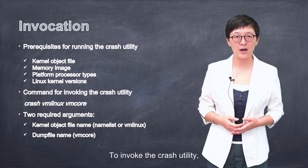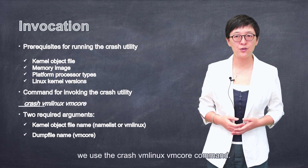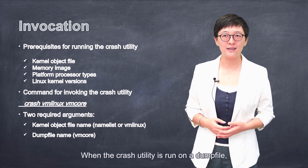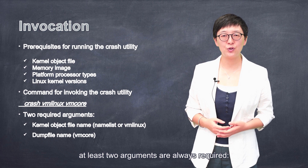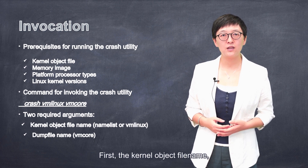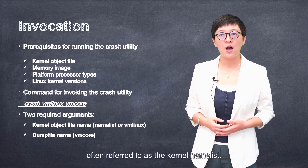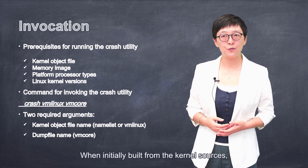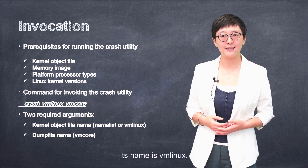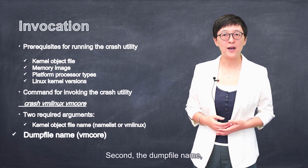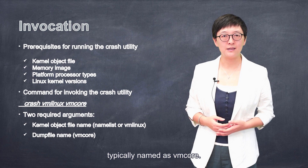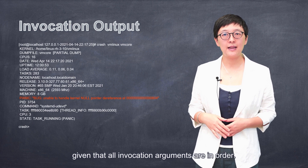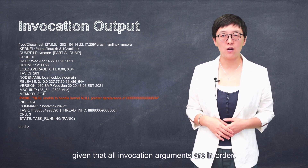To invoke the crash utility, we use the crash vmlinux vmcore command. When the crash utility is run on a dump file, at least two arguments are always required. First, the kernel object file name, often referred to as the kernel name list — when initially built from the kernel sources, its name is vmlinux. Second, the dump file name, typically named vmcore.